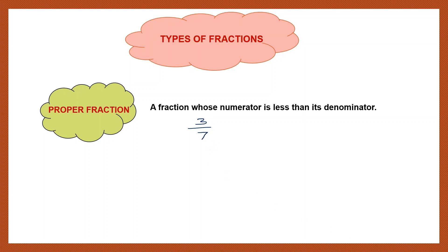Let's take another example. Suppose I say 21 by 27. Here also you can see that the numerator 21 is less than its denominator 27. So, if you have a fraction whose numerator is less than its denominator, you call it a proper fraction.